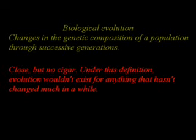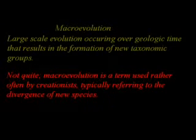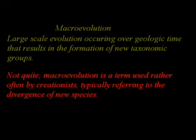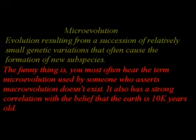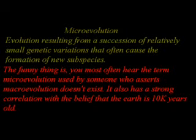The definition given for biological evolution is: changes in the genetic composition of a population through successive generations — close, but no cigar. Under this definition, evolution wouldn't exist for anything that hasn't changed in a while. Macro evolution is defined as: large scale evolution occurring over geologic time that results in the formation of new taxonomic groups. Not quite — macro evolution typically refers to the divergence of a new species. Technically, a breed or subspecies is a taxonomic group, so under their definition, evolution within the species would still be macro evolution. Micro evolution is defined as: evolution resulting from a succession of relatively small genetic variations that often cause the formation of a new subspecies. The funny thing is, you most often hear the term micro evolution used by someone who asserts macro evolution doesn't exist, and it has a strong correlation with the belief that the Earth is 10,000 years old.